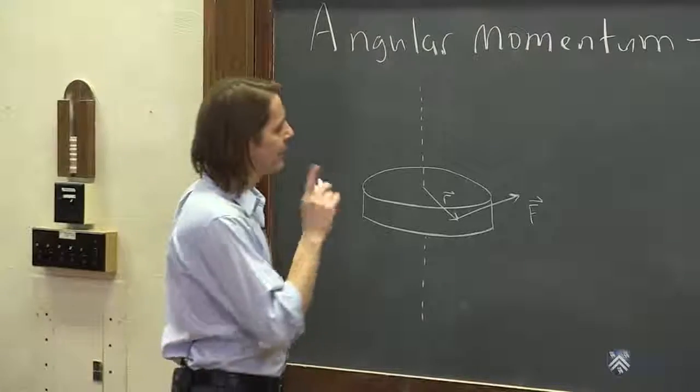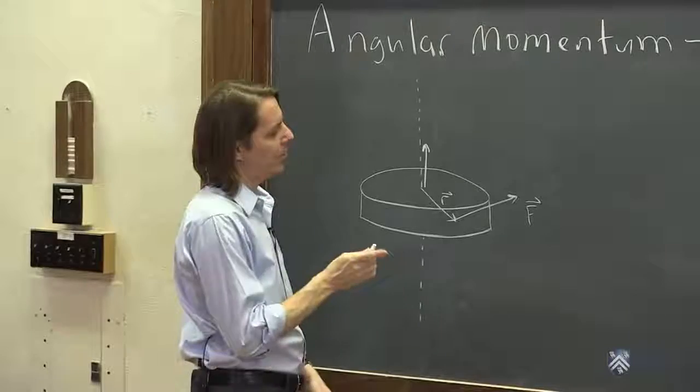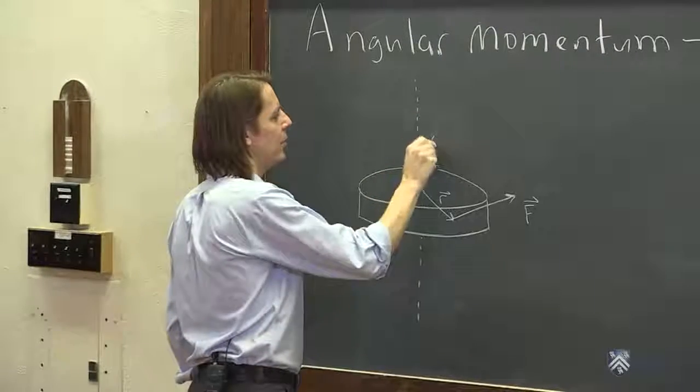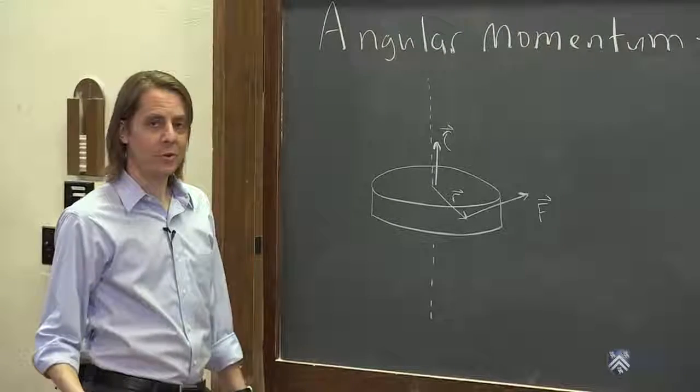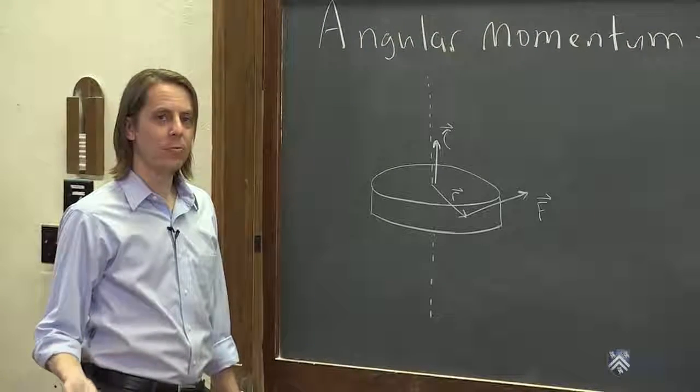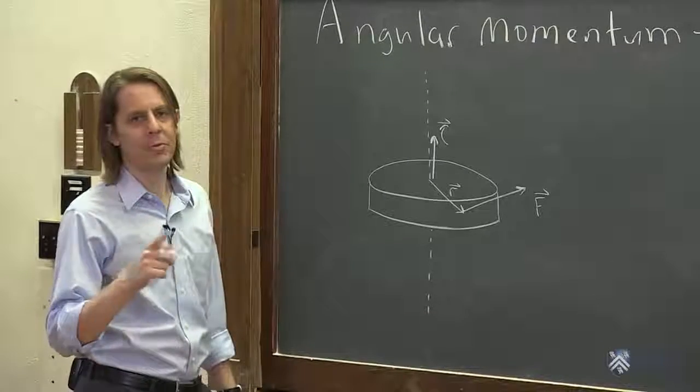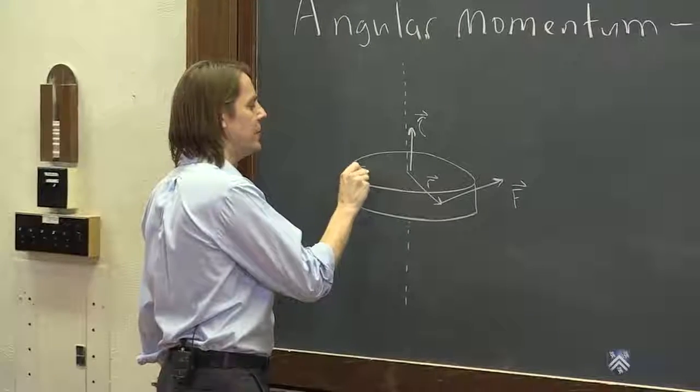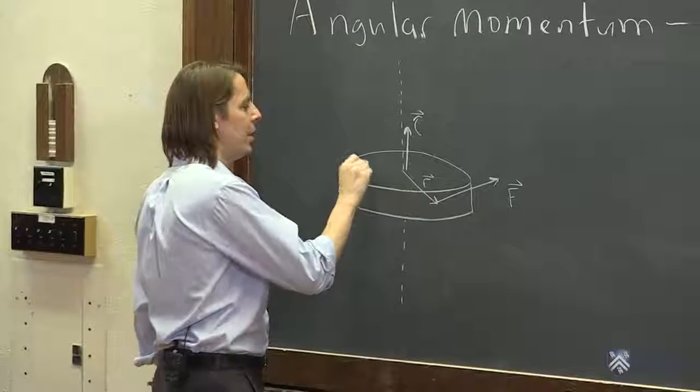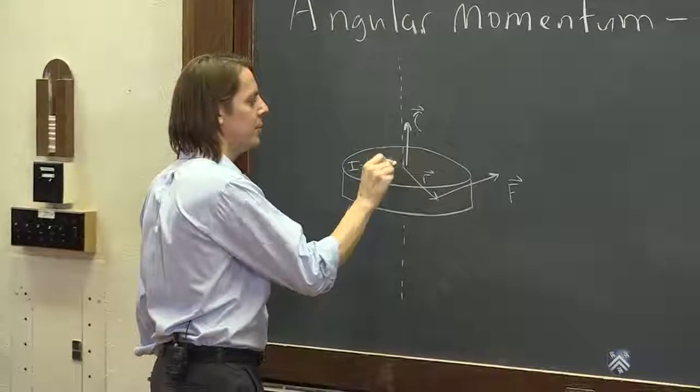The direction of the torque is defined as up—R cross F is up, so the torque vector points like that. When you apply a torque, you make something rotate, and how much depends on the torque and the moment of inertia. That's the one thing that is not a vector. The moment of inertia is like the mass for rotation. For a disk, it's one half the mass times the radius squared.